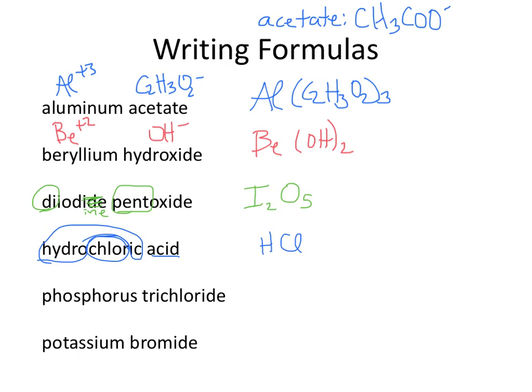For the next one, we have phosphorus trichloride. The number prefix tells us we don't have to worry about balancing charges. Phosphorus is just phosphorus, and trichloride is 3 chlorines: PCl₃. Then for the last one, we have potassium — that's K. Bromide is Br. Since potassium is plus 1 and bromine is minus 1, it's just KBr.